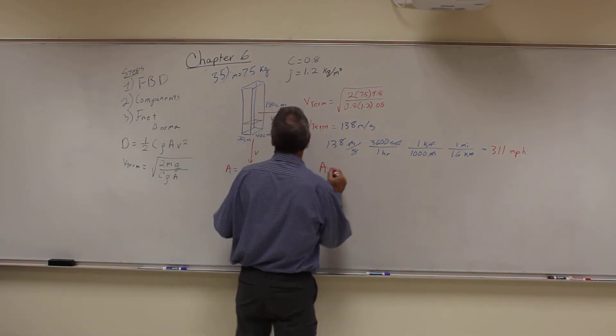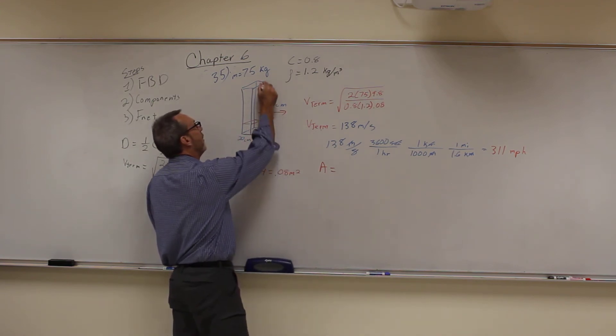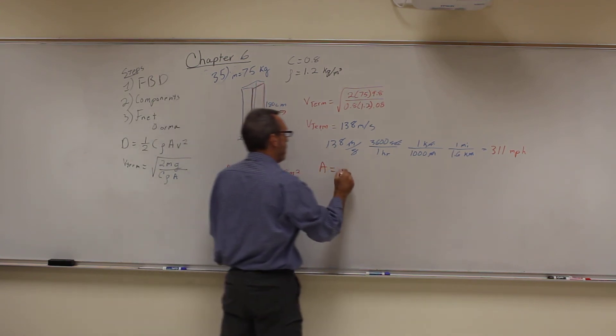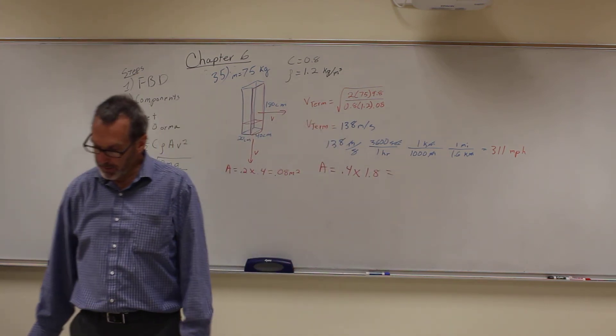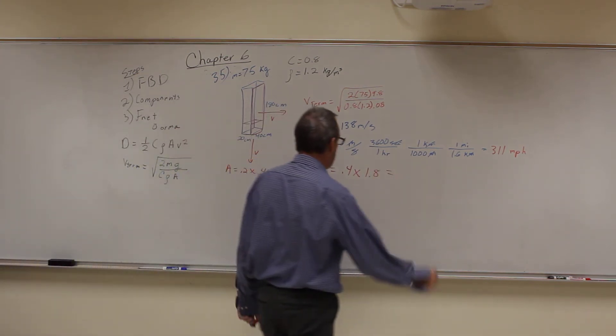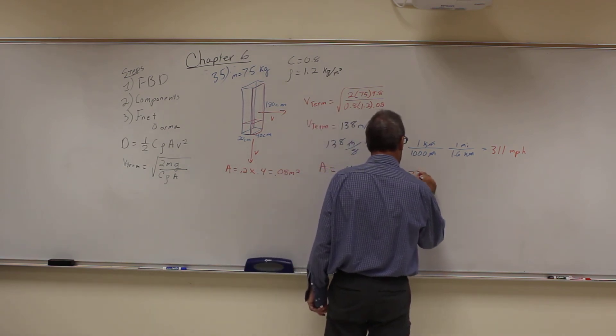His velocity this way—essentially he's falling like this face down so he's going that direction. Then the area changes because the area is now this rectangle, so it's going to be 0.4 times 1.8, or you get an area of 0.72 square meters.